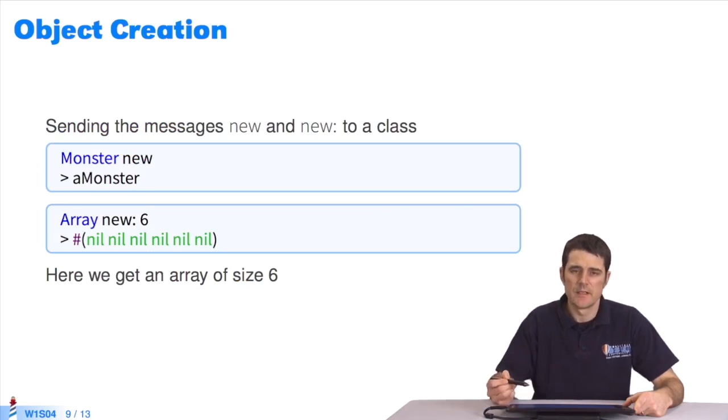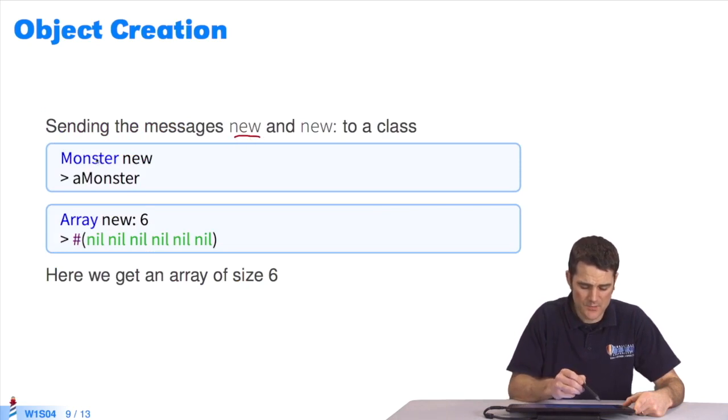We can create objects directly with the message new. I send new to the class monster, and I'll get an instance of the class monster. I can create an instance of the class array by specifying new and attributing a parameter, which I do with a colon, and then here the integer 6, and I get an array of size 6.